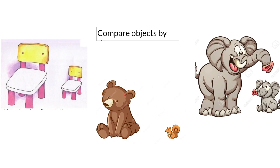Now let's take a look at the bear and the squirrel. The bear is a big animal and the squirrel is a small animal. So here we have small and here we have big.